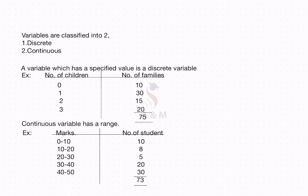Next is about the continuous variable. A continuous variable has a range. Previously, the examples of weight and number of students were given — that is a continuous variable. Here, the marks given has a range: 0 to 10, 10 to 20, etc. This is a continuous variable, and the number of students is the frequency.